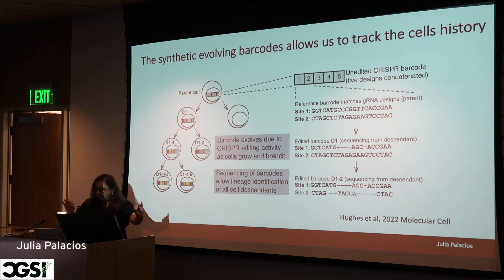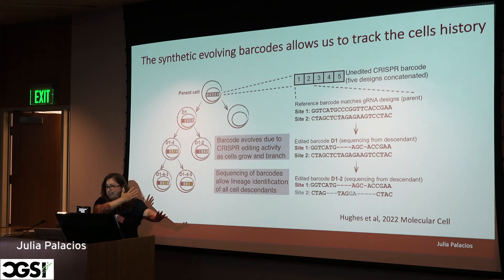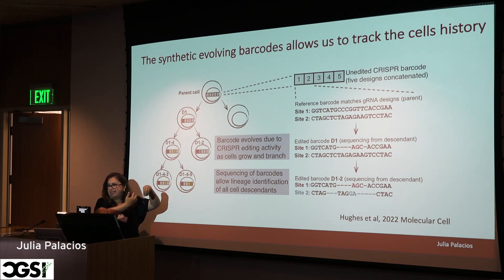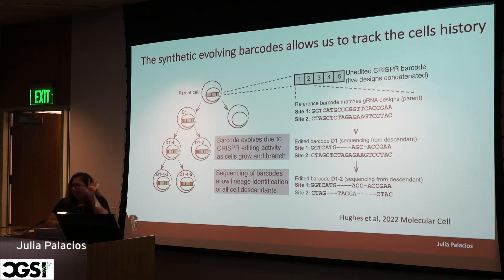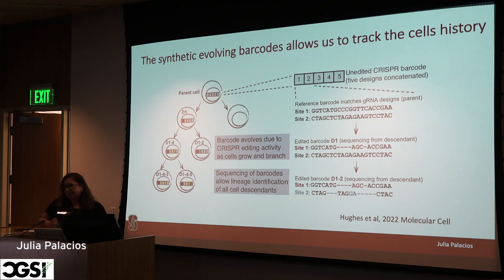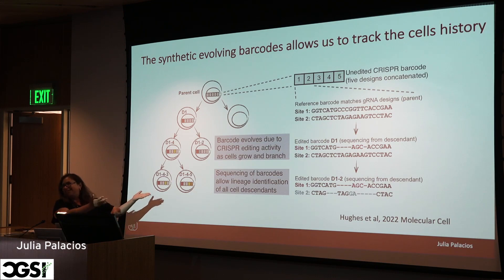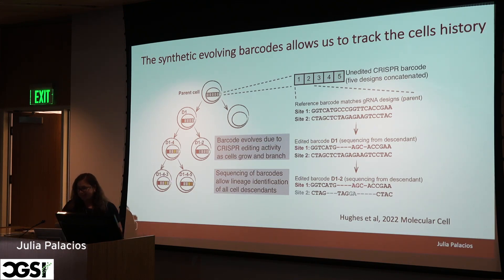With that tree you can sequence whatever gene you're interested in for cancer. Now you can infer the tree with very high accuracy, infer the internal states of the parental nodes, and infer when the tumor started to grow. Of course, this is a bit of science fiction because it's not yet used in humans — it's in mice and in the dish — but I see this being the future. At some point I think everybody's going to have their cells tagged this way.